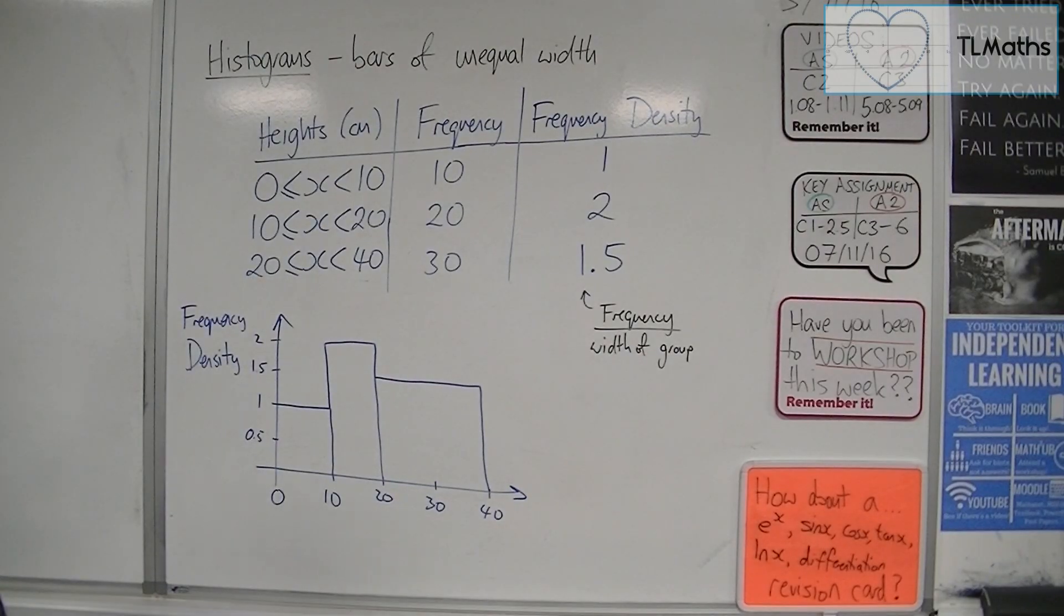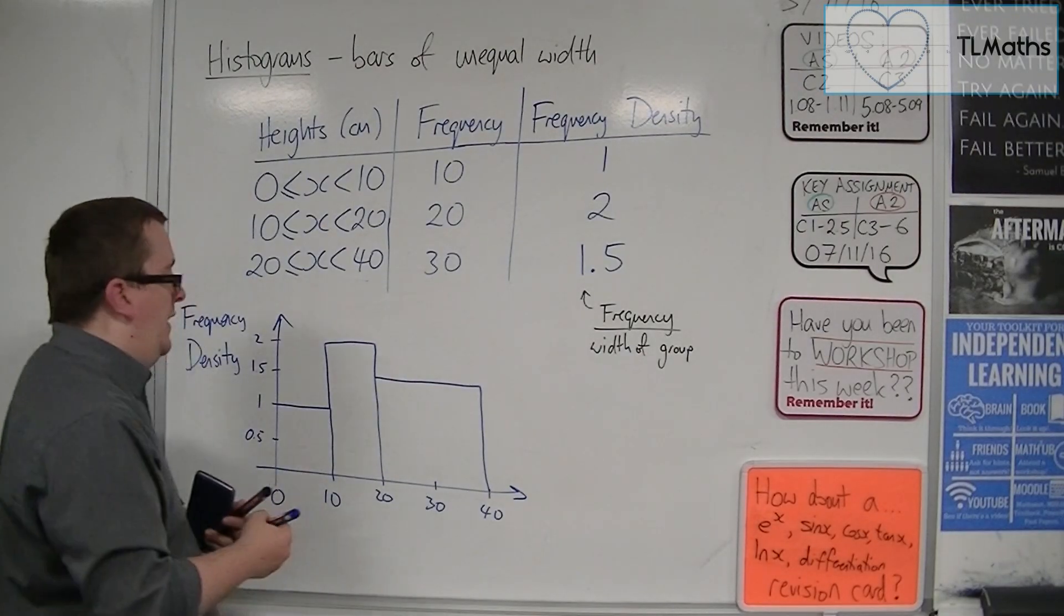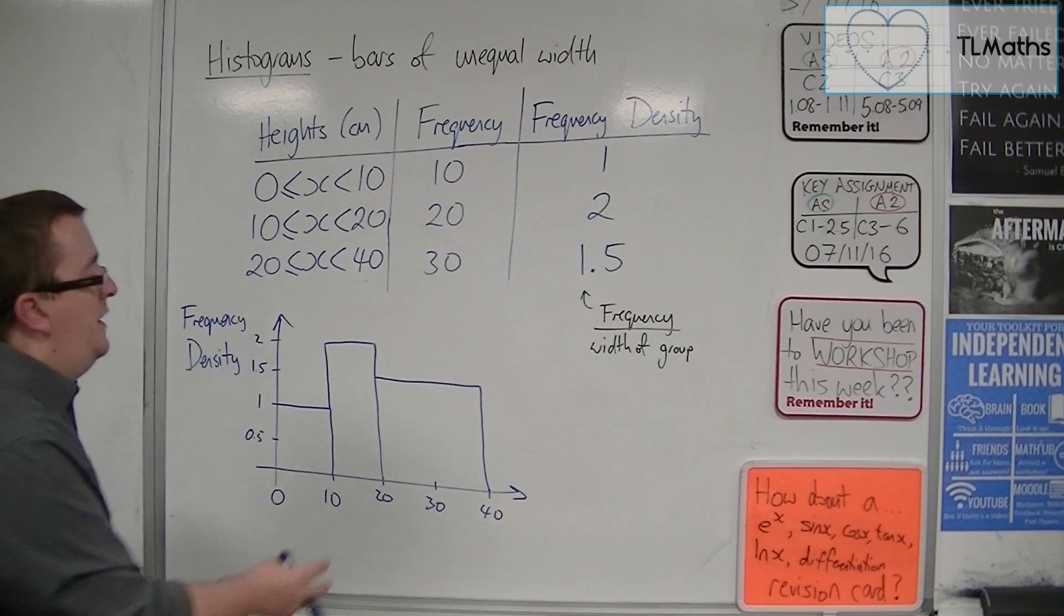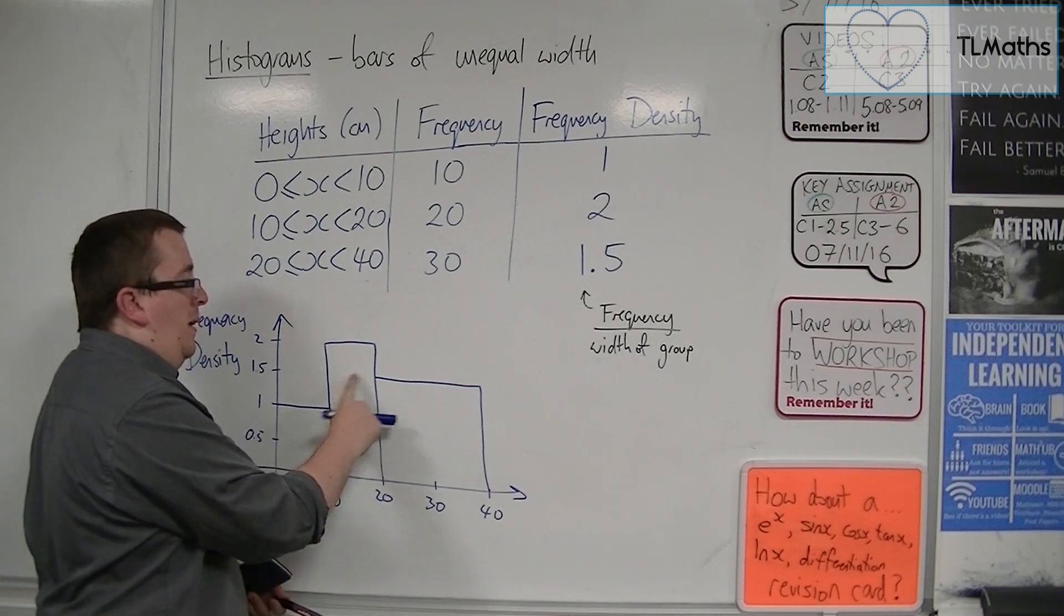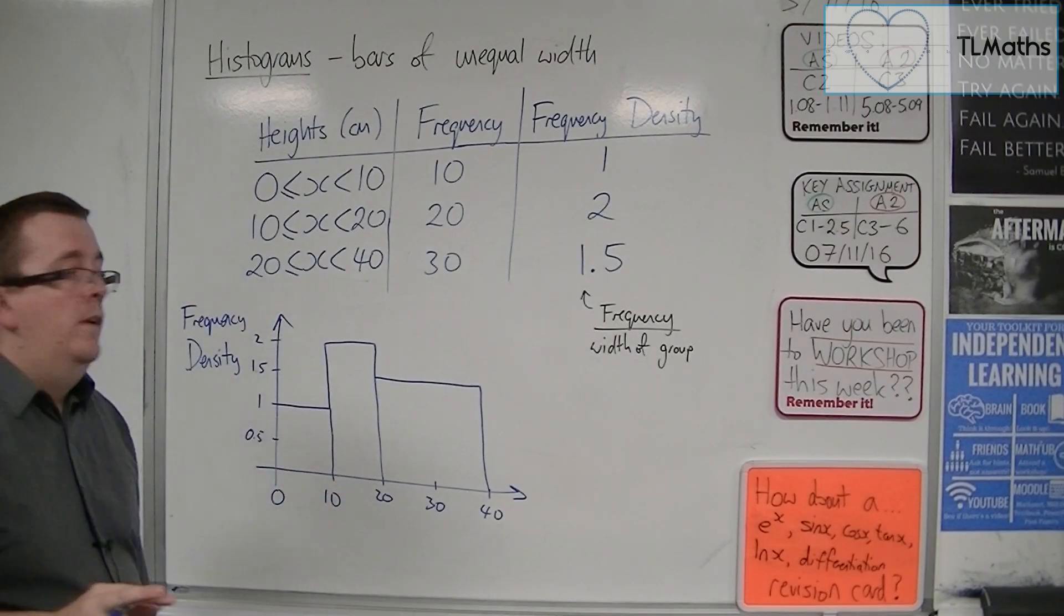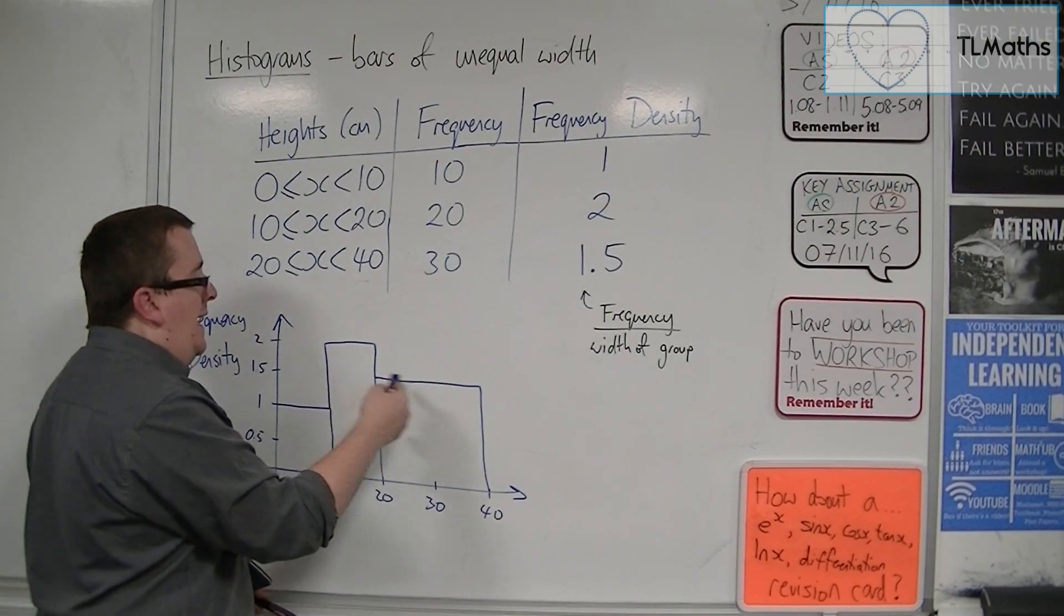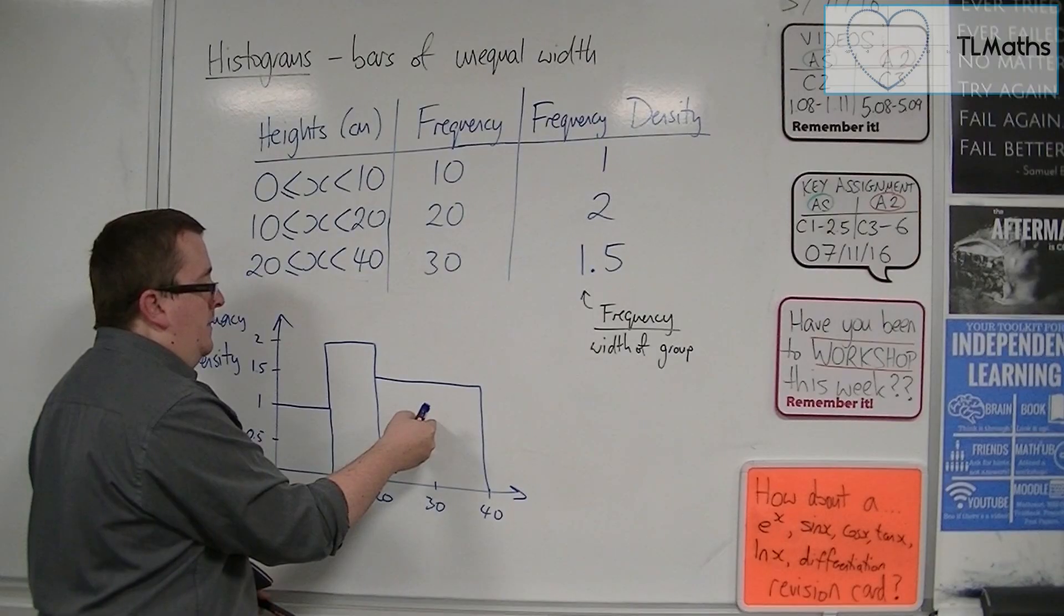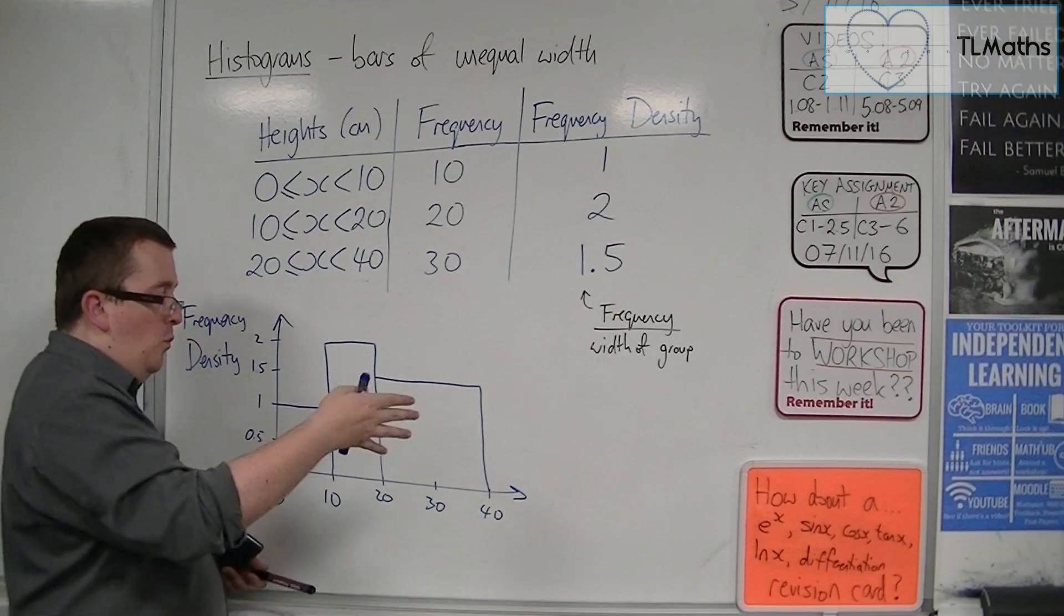So now, what you can see is that this bar to this bar, proportionally-wise, it looks appropriate. The fact that that is 20 and that is 30. It's a little bit shorter, a little bit wider.